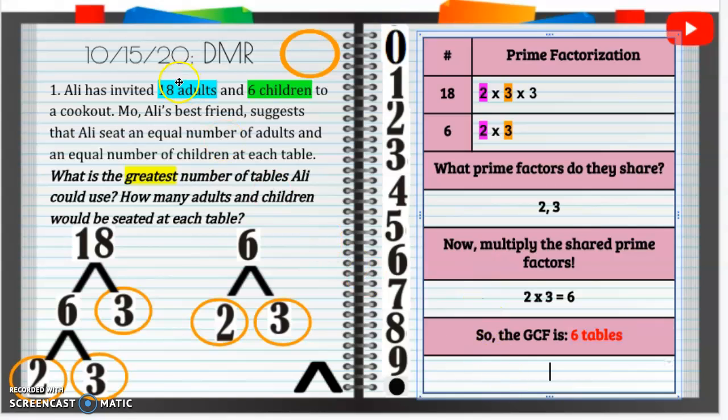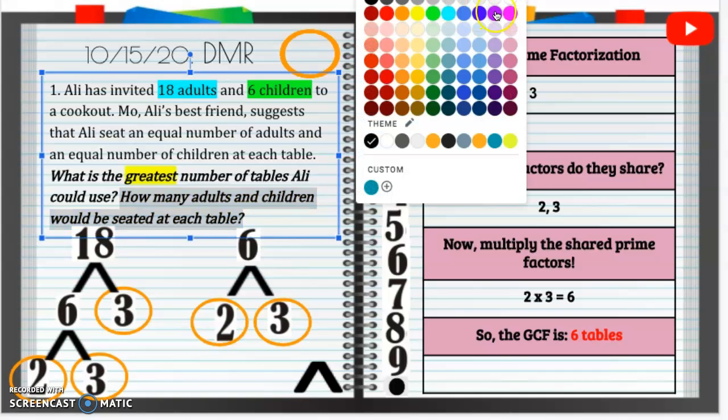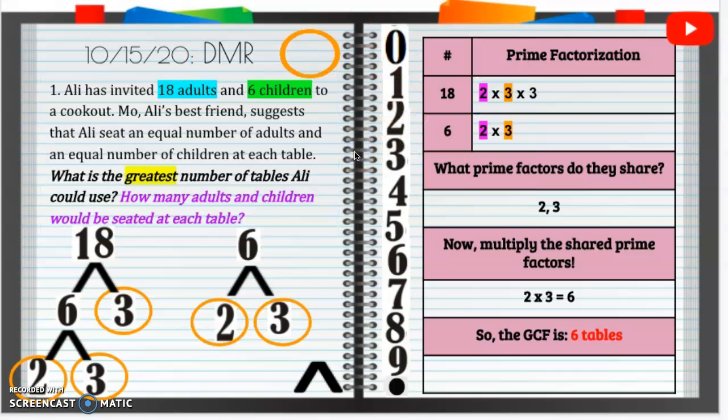But then the next part of our answer, or the next part of the question says, how many adults and how many children would be seated at each table? So we need to figure out how many adults and how many children. We talked about this the other day. Okay, so if we were to take our step further, remember, if we have adults, so there were 18 adults, we divide that 18 by the greatest common factor. So 18 divided by 6, that equals 3. So there's going to be 3 adults.